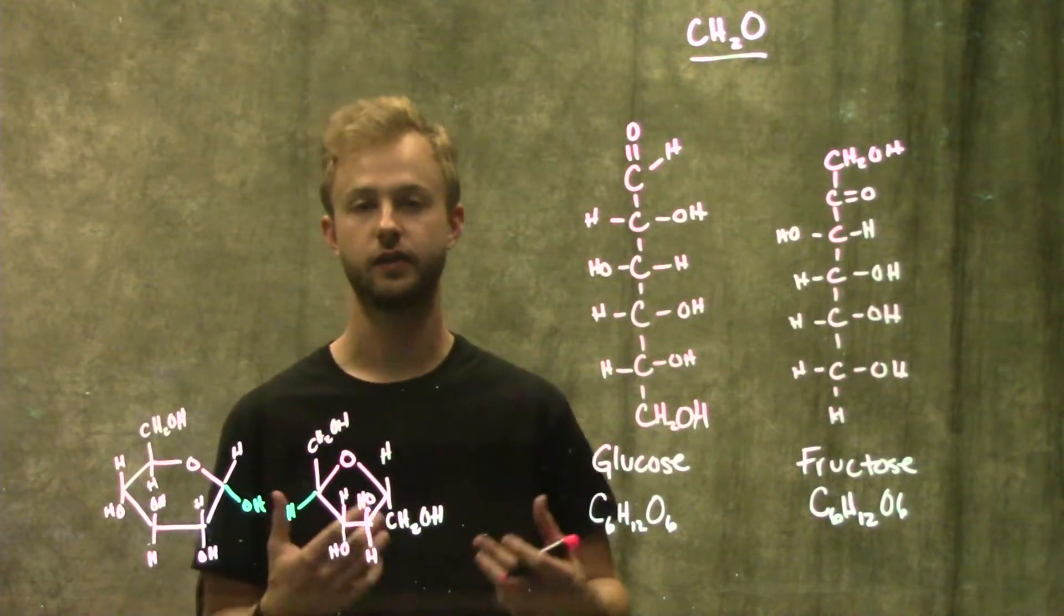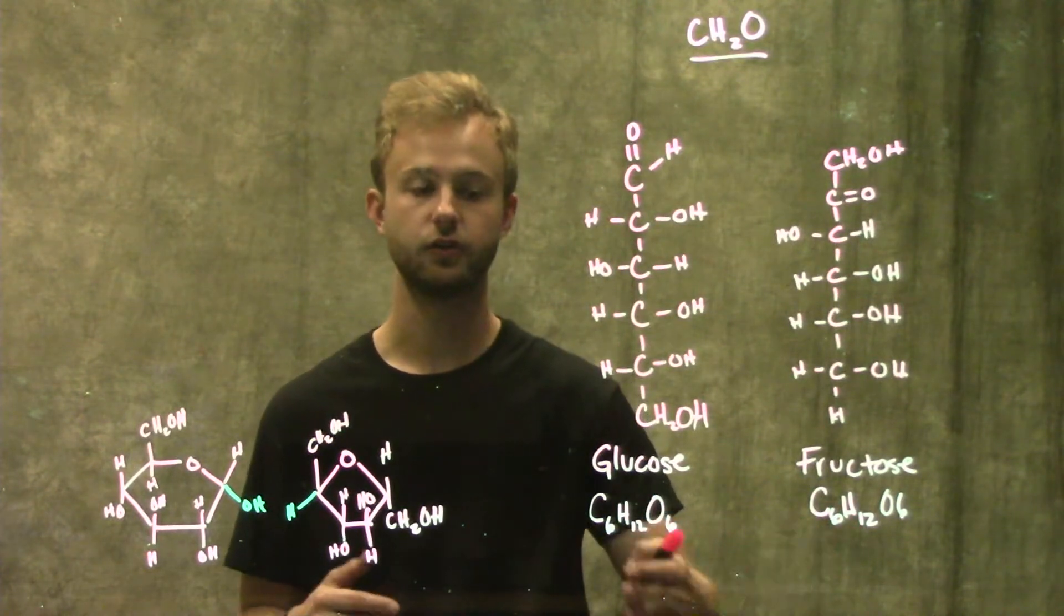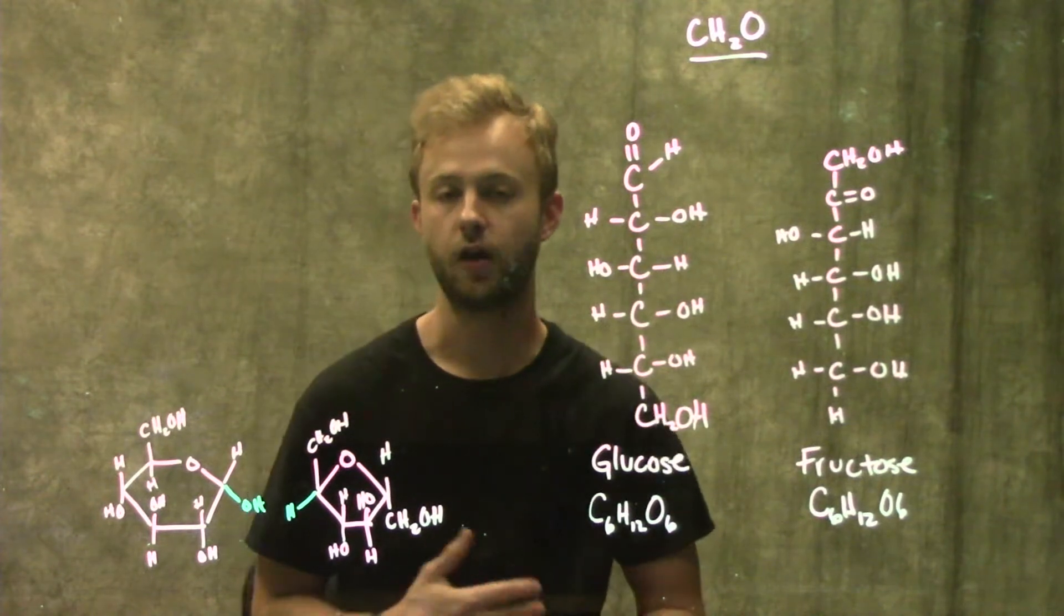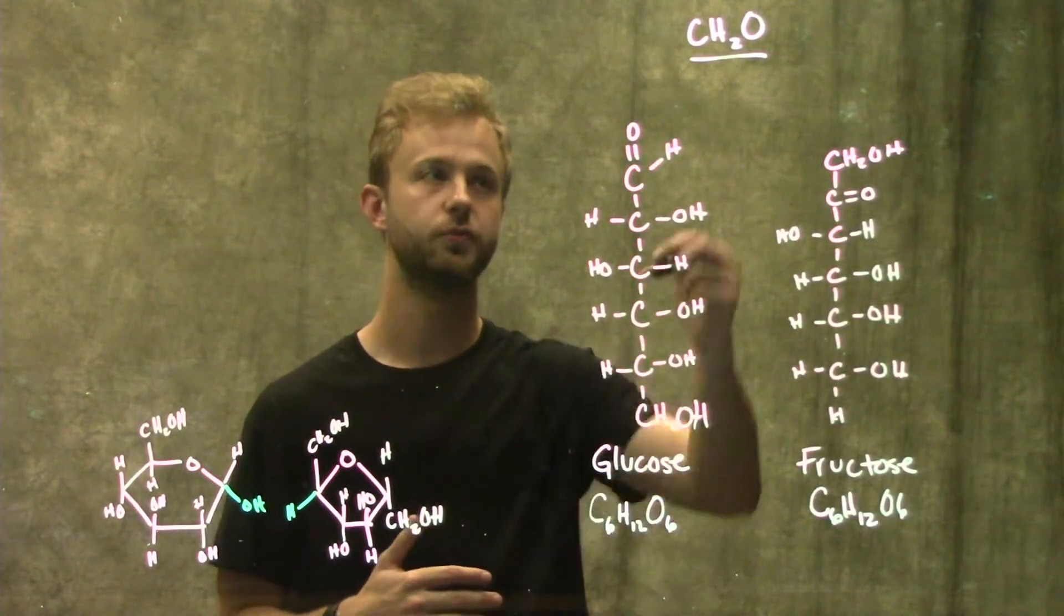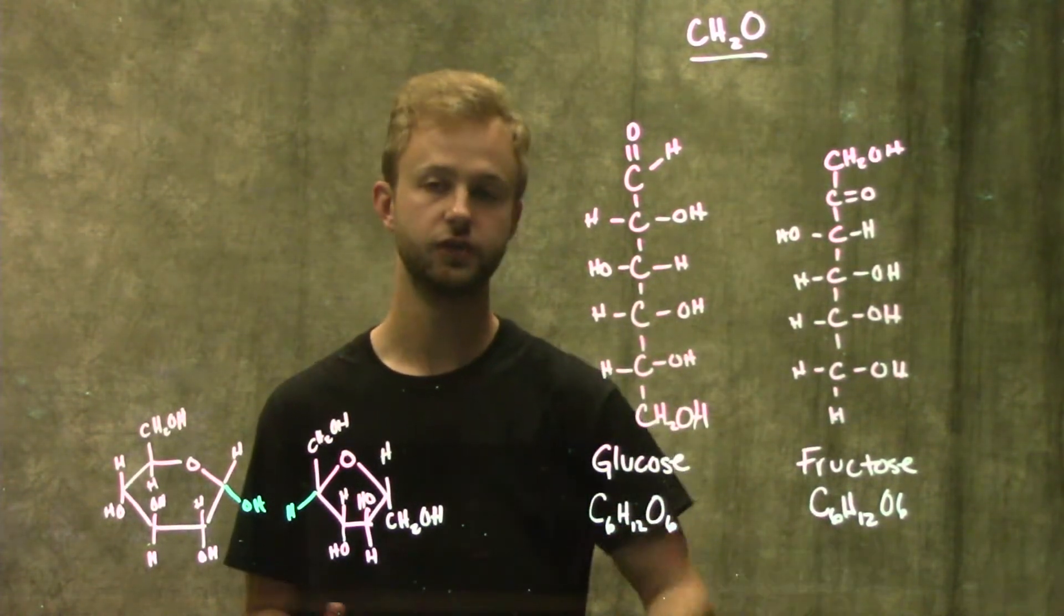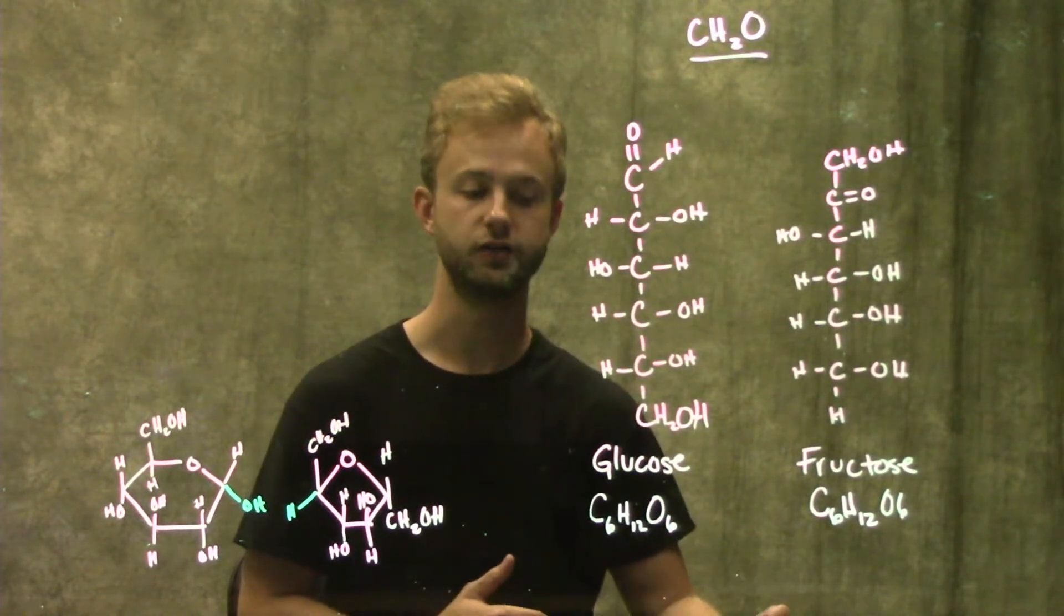So we're going to start out looking at monosaccharides. I've drawn two monosaccharides right here, glucose and fructose. Monosaccharide sugars are typically going to have a molecular formula that's some multiple of CH2O, which we can see in both glucose and fructose, who both have the molecular formulas C6H12O6.